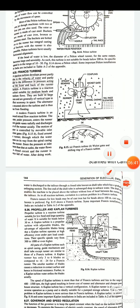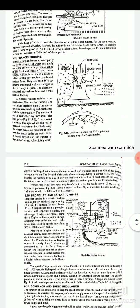Next is your Francis turbine. A reaction turbine develops power partly due to the velocity of the water and partly due to the difference in pressure acting on the front and back of the runner buckets. A Francis turbine is a reaction turbine suitable for medium heads and medium flows. They are built in large sizes and are generally of vertical type for economy in space. The alternator mounted above the turbines and thus that is free from the flooding. So the modern Francis turbine is an inward mixed flow reaction turbine. This is the diagram internal structure of a Francis turbine which have wicket gates and shifting rings of a Francis turbine.